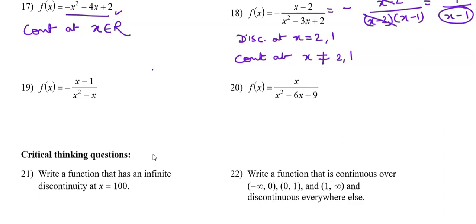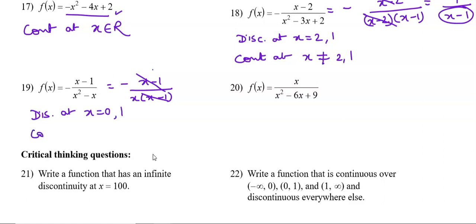Question number 19: the numerator is -(x-1) and denominator has x as a common factor giving x(x-1). So it is discontinuous at x = 0 and at x = 1. It is continuous at x ≠ 0 and x ≠ 1.